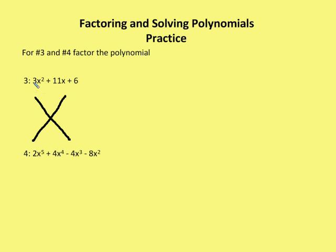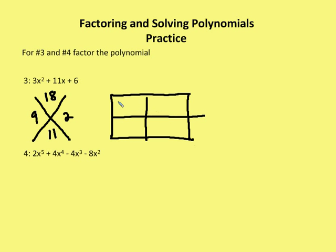So I'm going to take the product of A and C, which is 18. And the value of B is 11. I want to find the factors of 18 that add to 11, which are 9 and 2. I'm going to use my box and put the first term in the upper left corner. Bottom right corner is going to be the C value. Bottom left is going to be either factor with the x.